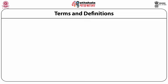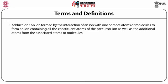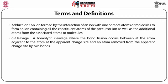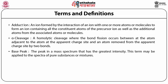Terms and definitions: all terms are taken from the IUPAC dictionary. Adduct ion: an ion formed by the interaction of an ion with one or more atoms or molecules to form an ion containing all the constituent atoms of the precursor ion as well as additional atoms from the associated atoms or molecules. Alpha cleavage: a homolytic cleavage where the bond fission occurs between the atom adjacent to the atom at the apparent charge site and an atom removed from the apparent charge site by two bonds.